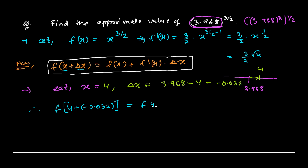So f(4 + (−0.032)) = f(4) + f'(4)·(−0.032). Here f'(x) = (3/2)√x, so f'(4) = (3/2)·√4. The delta x is −0.032, giving us f(4) + (3/2)·√4·(−0.032).